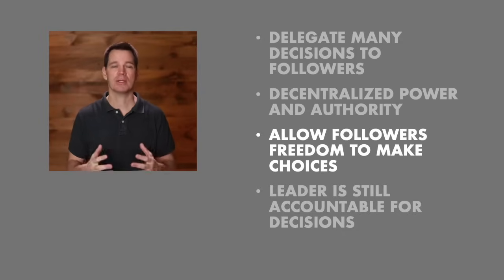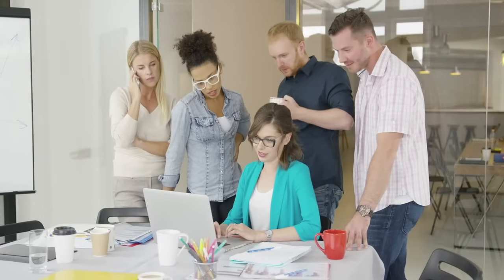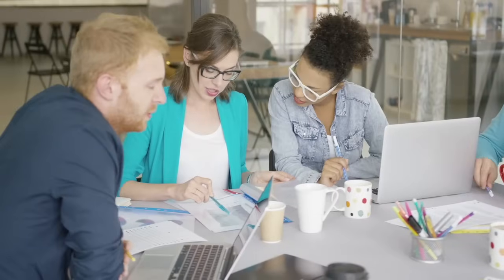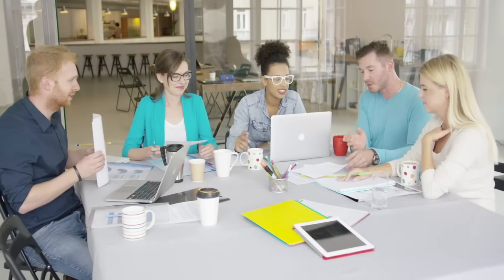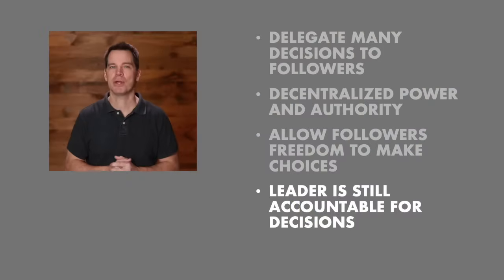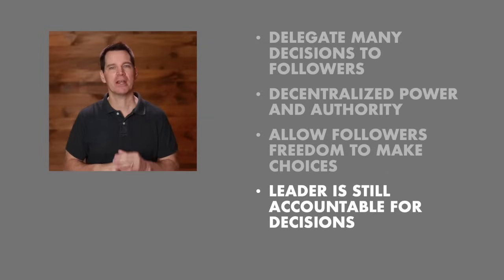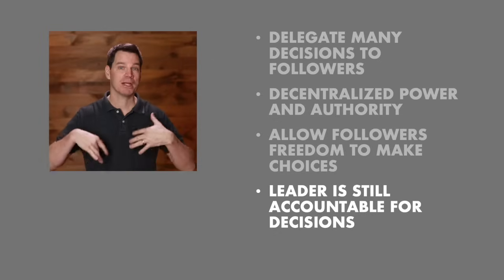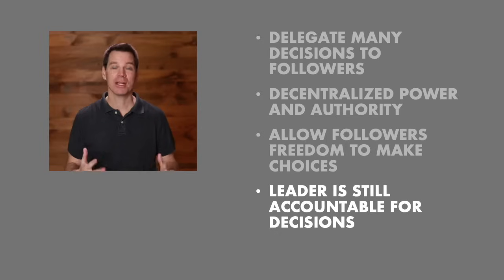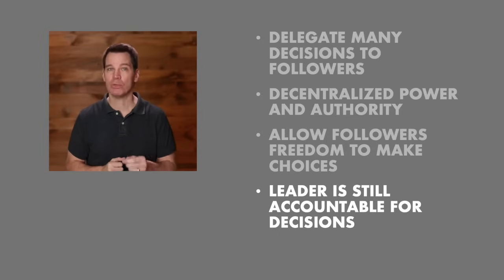For example, if a department is about to purchase new computers, a democratic leader would likely give some basic criteria on cost or compatibility, but then delegate the final decision, and each follower would purchase their own computer. If a decision goes badly, the democratic leader is not off the hook — they are still responsible for the outcomes and team decisions. They can't delegate their accountability. They just believe the best decisions will be made with lots of input from their followers.